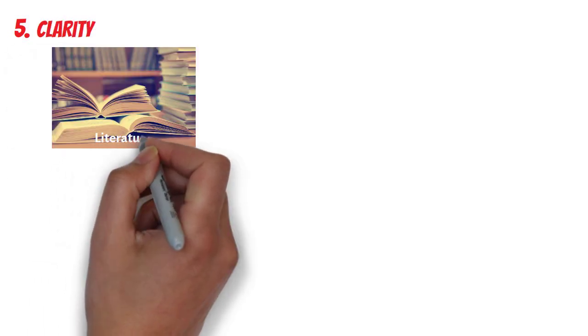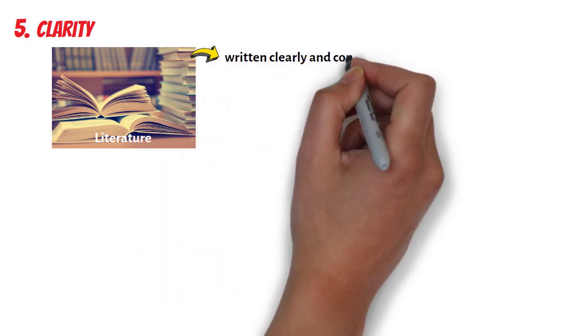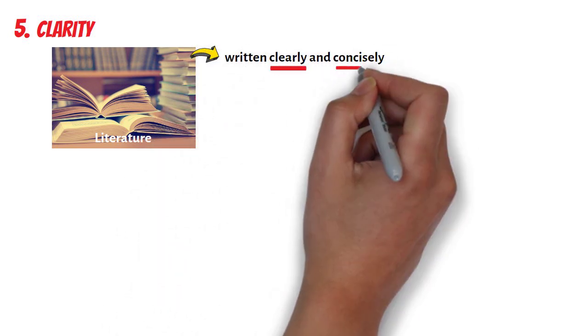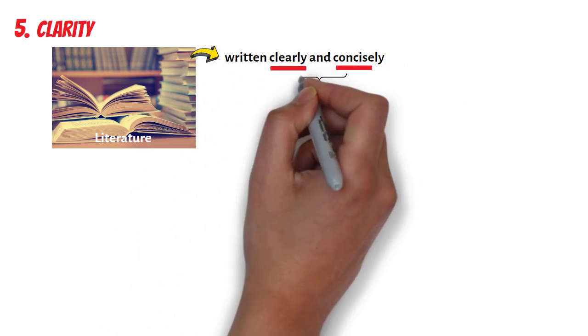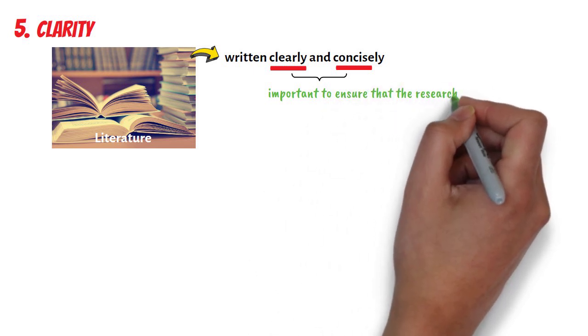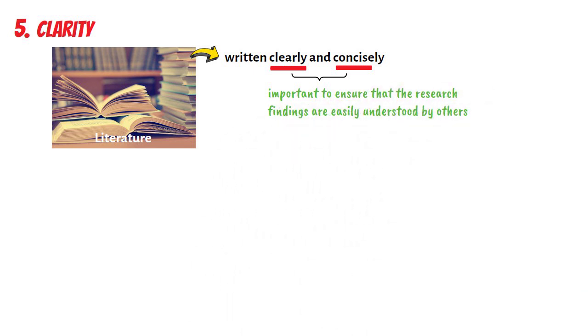Fifth, in terms of clarity: literature should be written clearly and concisely. Clear and concise literature is important to ensure that the research findings are easily understood by others.